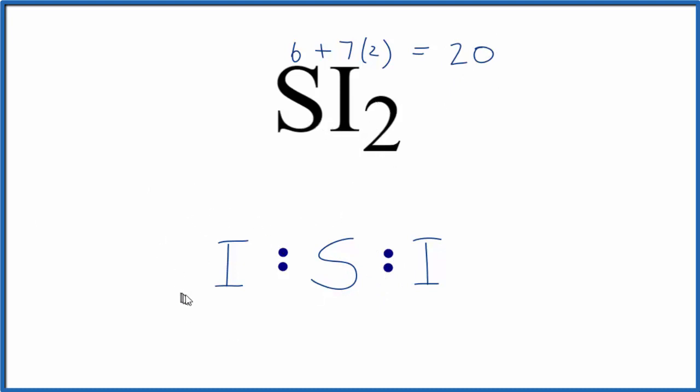We'll go around the outside of these atoms here to complete their octets. Right now we've used 16, we have 4 more valence electrons, so we'll put those on the sulfur to complete its octet. When we do that, we've used all 20 valence electrons, and each atom has an octet.